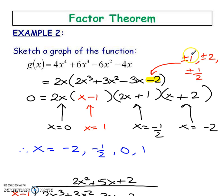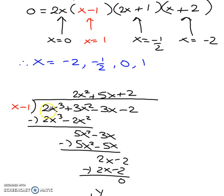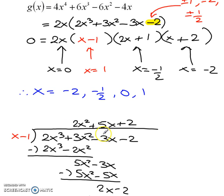I start with the easy ones — positive 1. Sub it into the polynomial and positive 1 worked, so x minus 1 is one of our factors. Then I did long division: divided the cubic by x minus 1 and got the quotient. Then I broke that quotient up using regular factoring and got the last two factors.